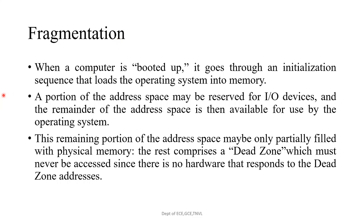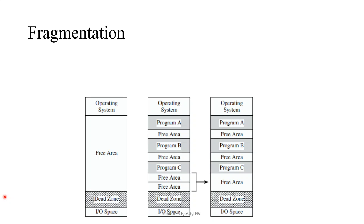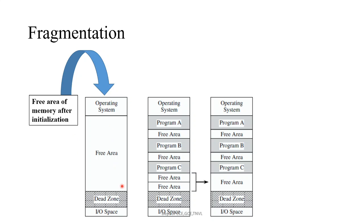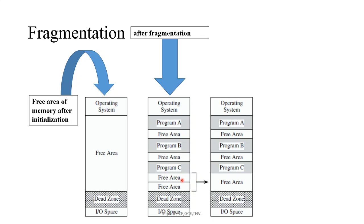Regarding fragmentation: when a computer is booted up, it goes through an initialization sequence that loads the operating system into memory. A portion of the address space may be reserved for fixed devices, and the remainder is available for the operating system. This remaining portion may be only partially filled with physical memory; the rest comprises a dead zone which must never be accessed since there is no hardware that responds to those addresses. After initialization there is a free area of memory available. After fragmentation — with programs A, B, and C loaded — the free areas become fragmented into multiple smaller areas. These two free areas can be combined; combining them is called coalescing.